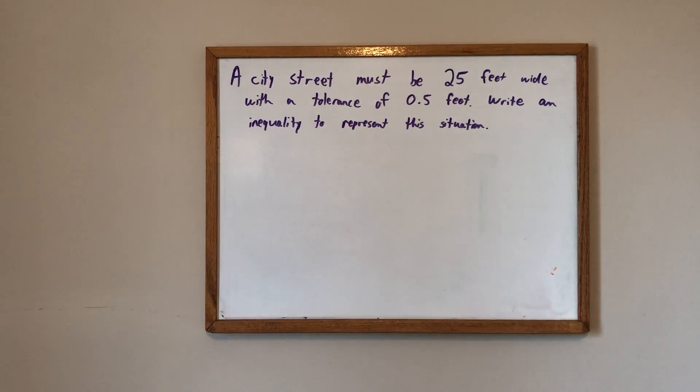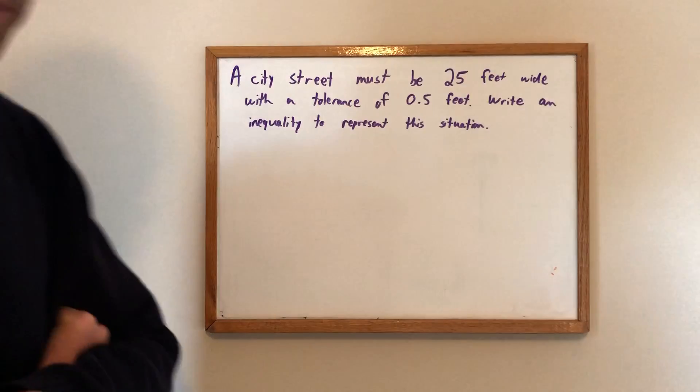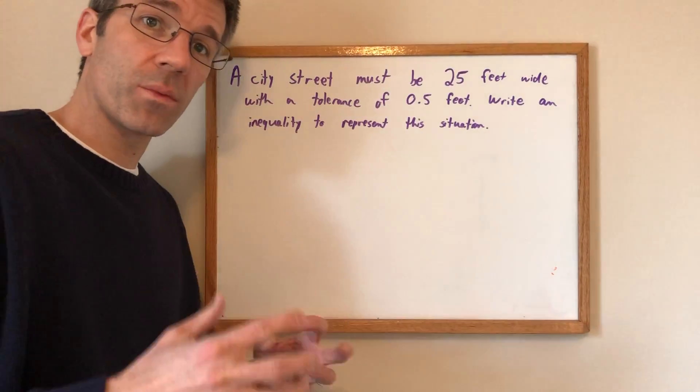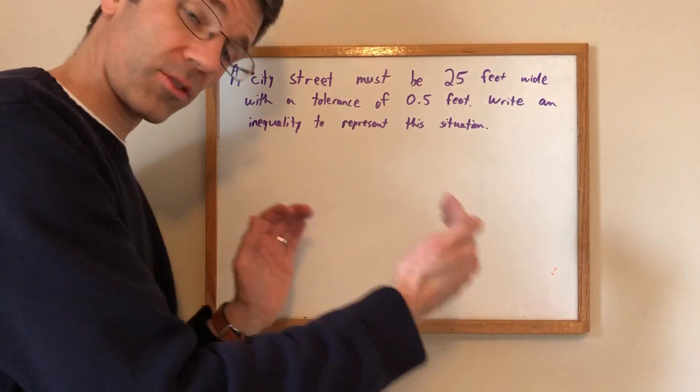Well, a city street must be 25 feet wide with a tolerance of 0.5 feet. If we're going to write an inequality to represent this situation, let me point at one of the keywords: tolerance.